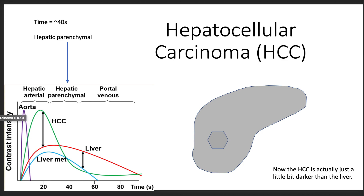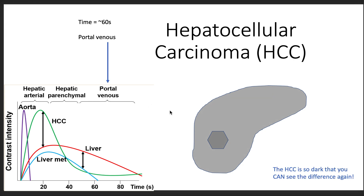Then we get into the portal venous phase. The liver has a dual blood supply: the first part is the arterial blood supply through the hepatic arteries, and the second part is through the portal vein, where all of the deoxygenated blood from the GI tract is now flowing into the liver. During this portal venous phase, the liver is still holding on to some of the brightness it got from the arterial phase, and the HCC is now even darker.